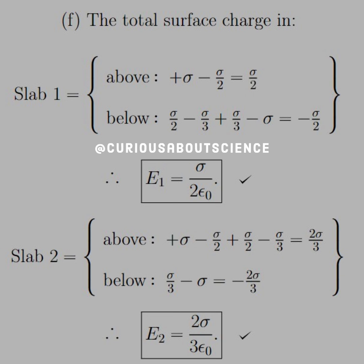Similarly, for slab 2, everything above is now complicated because you have to incorporate slab 1 in the top plate. And then below, we just incorporate the bottom bound charge and the bottom plate. But again, we see that we get plus or minus 2 sigma over 3, and therefore, field 2 is the same as what we found earlier as well.